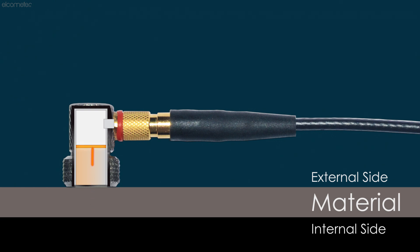The gauge then uses the speed of the pulse and the time taken between the pulse being emitted and the echo being detected to calculate the thickness of the material.